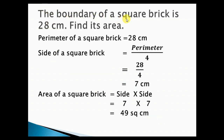The boundary of a square garden is 28 centimeters. Find its area. Note that boundary is also called perimeter. Perimeter of the square equals 28 centimeters. Side equals perimeter divided by 4, which equals 28 divided by 4, giving a side of 7 centimeters. Area of the square equals side into side equals 7 into 7, which equals 49 square centimeters.